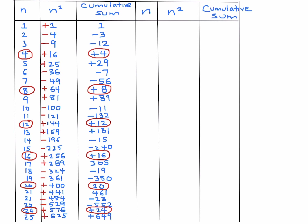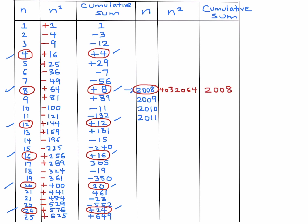Our last term is n = 2011, so let's work from n = 2008, which is divisible by 4. By our pattern, the cumulative sum at n = 2008 is simply 2008. Then we need to add the terms for n = 2009, 2010, and 2011. Note that 2008 squared is 4,032,064, though what matters most is that the cumulative sum at n = 2008 equals 2008.